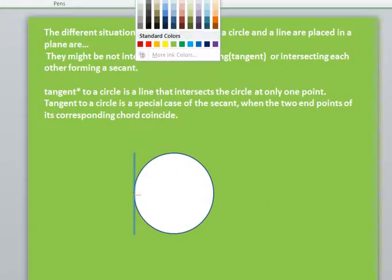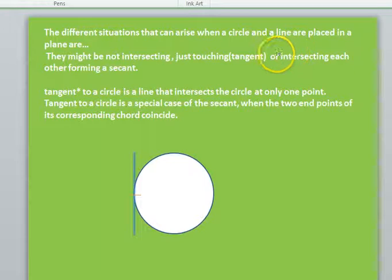Different situations that can arise when a circle and a line are placed in a plane are, they might not be intersecting which I have just shown you above, just touching or the line is called a tangent to the circle or intersecting each other forming a secant.